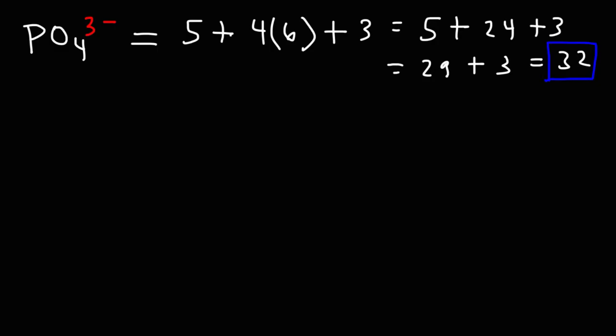Now, 32 is a multiple of 8, and that is significant because it tells us that the central phosphorus atom doesn't contain any lone pairs on it, any dots or electrons. It only contains bonds. And this trend, for the most part, works if there are no hydrogen atoms in the molecule.